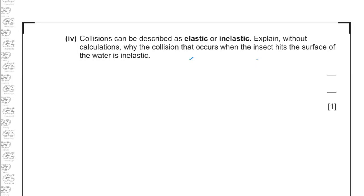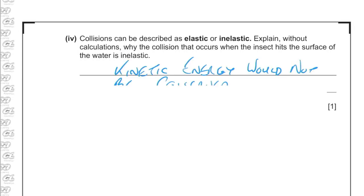When the insect hits the surface of the water, the collision is inelastic because kinetic energy is not conserved. The insect splodges into the water, ending up with no velocity, and energy is transferred to sound, possibly heat, and a water wave traveling outward — so kinetic energy is not conserved and the collision is inelastic.